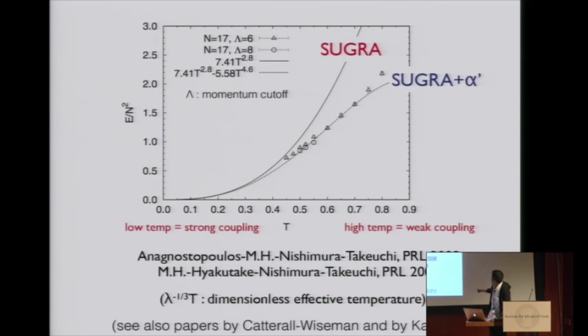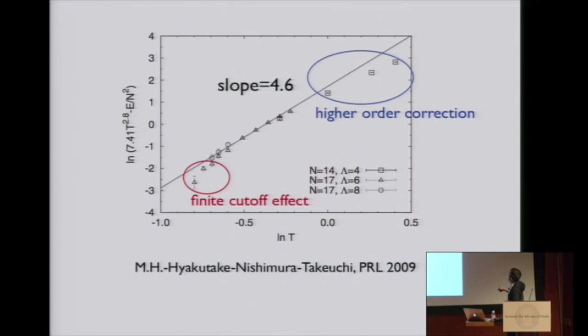In order to really reproduce this power 4.6, we can take a deviation from supergravity result and take log-log plot. Then we can really see, we can fit the result using a straight line with slope 4.6. That means power T^4.6 is really realized. If we go to weak coupling, higher order of α' can appear, so it can deviate from a straight line.